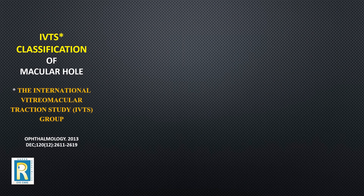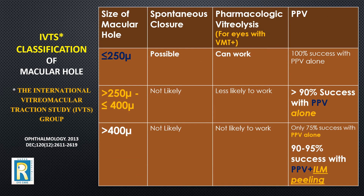Depending on the size of the hole and the presence or absence of vitreomacular traction, we decide on the treatment. If the macular hole is less than 250 microns wide, it is called a small macular hole. These holes can close on their own, and even injecting special chemicals like ocriplasmin can close such holes. If we operate on such holes, 100 percent of the time the holes get closed.